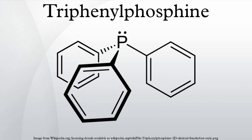PPh3 is pyramidal with a chiral propeller-like arrangement of the three phenyl rings. The rigidity of PPh3 contributes to the ease with which its derivatives crystallize. PPh3 is widely used in organic synthesis. The properties that guide its usage are its nucleophilicity and its reducing character. The nucleophilicity of PPh3 is indicated by its reactivity toward electrophilic alkenes, such as Michael acceptors, and alkyl halides. It is also used in the synthesis of biaryl compounds, such as the Suzuki reaction.